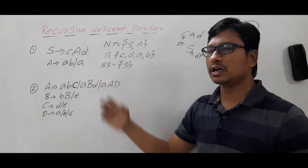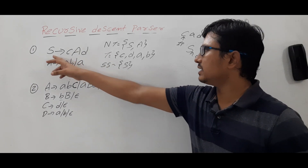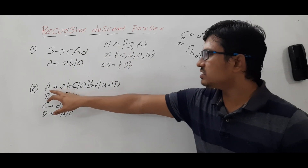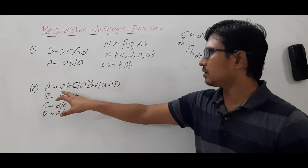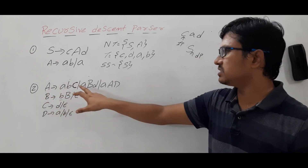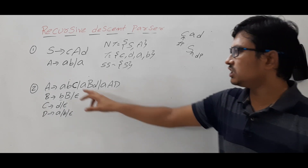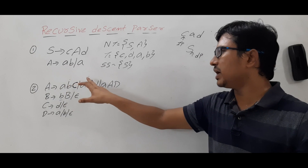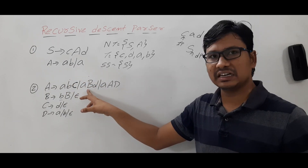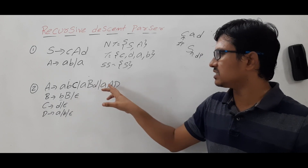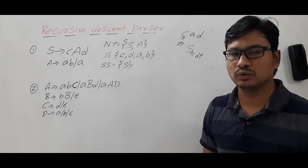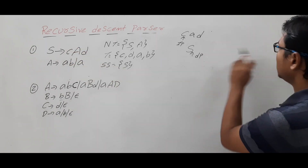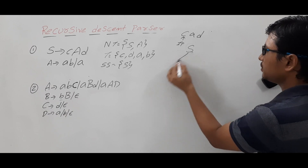If the descent pointer is pointing to a non-terminal, it looks at what productions correspond to that non-terminal. For S, we have only one production: CAD. For A, there are multiple productions — ABC, ABD, AAD. It will first use the first production; if everything matches, fine. If not, it will do backtracking and select the next production, and so on. Since S has only one production, it derives C, A, and D.